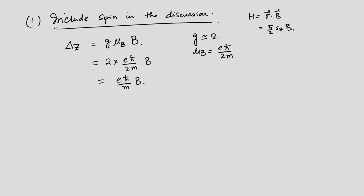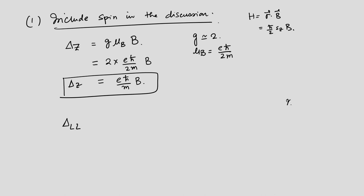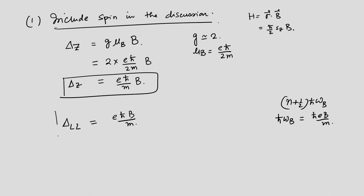The energy difference between Landau levels is Δ_LL = ħω_B = ħeB/m, since they are equidistant with spacing ħω_B. Comparing: Δ_Z = eħB/m and Δ_LL = eħB/m — they are exactly the same. This means the Landau level spectrum for spin-up electrons will coincide with the spectrum one level lower for spin-down electrons.